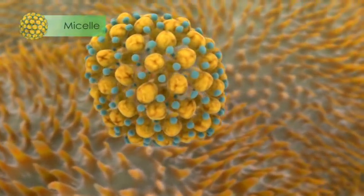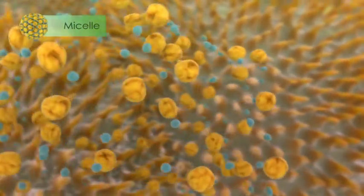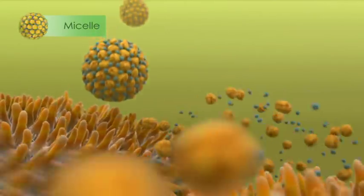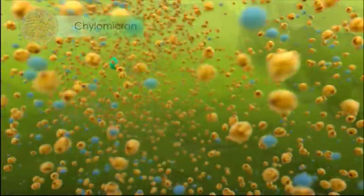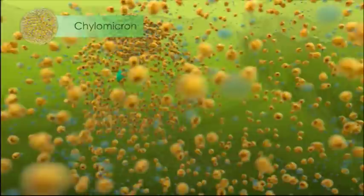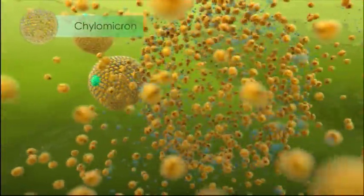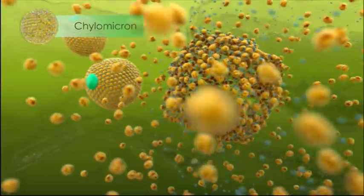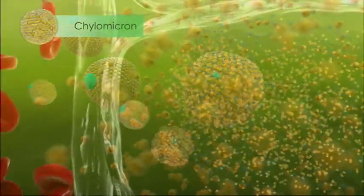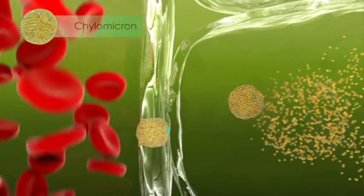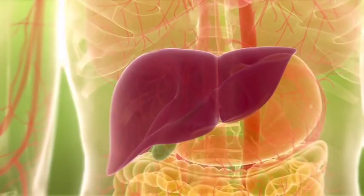The micelles then make contact with the intestinal cell wall where their contents are taken up into the cell. Once inside the cell, the micelle contents are repackaged into spherical particles called chylomicrons. The chylomicrons then carry their fatty contents into the bloodstream where they are delivered to their target tissues, including the liver.